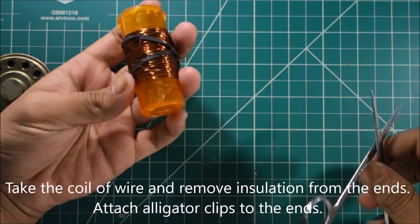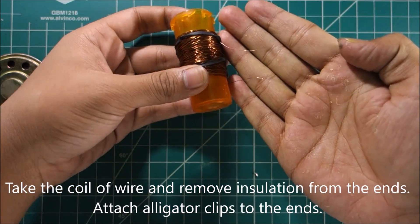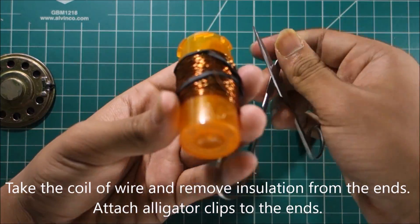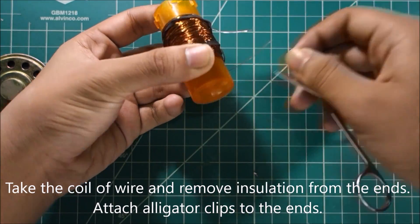Take some wire and coil it 220 times around a plastic bottle. Take the coil of wire and remove insulation from the ends. Attach alligator clips to the ends.